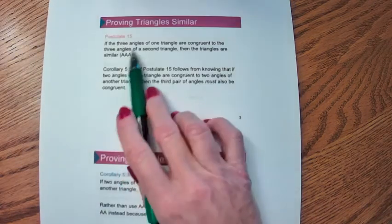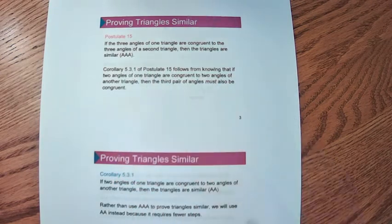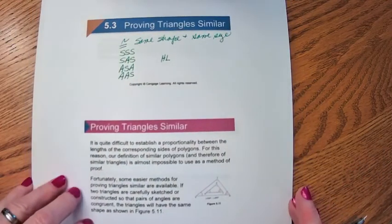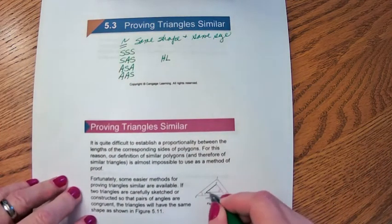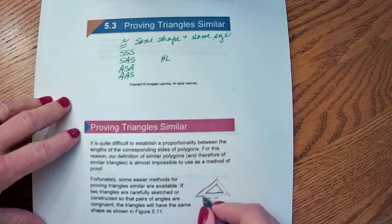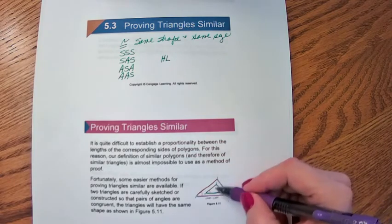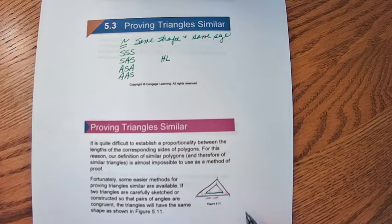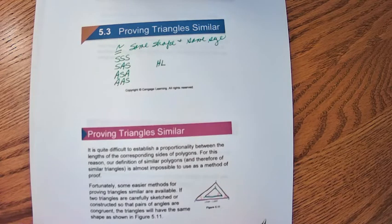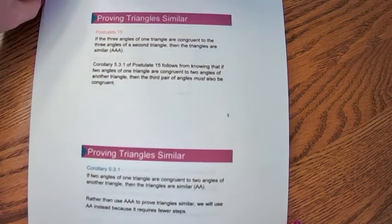If the three angles of one triangle are congruent to the three angles of a second triangle, then they must be similar. We have a picture of that scenario here. These two triangles are obviously the same shape but not the same size. These two angles are corresponding and congruent, these two angles are corresponding and congruent, and same here. So if all three angles are congruent, you obviously have similar triangles.